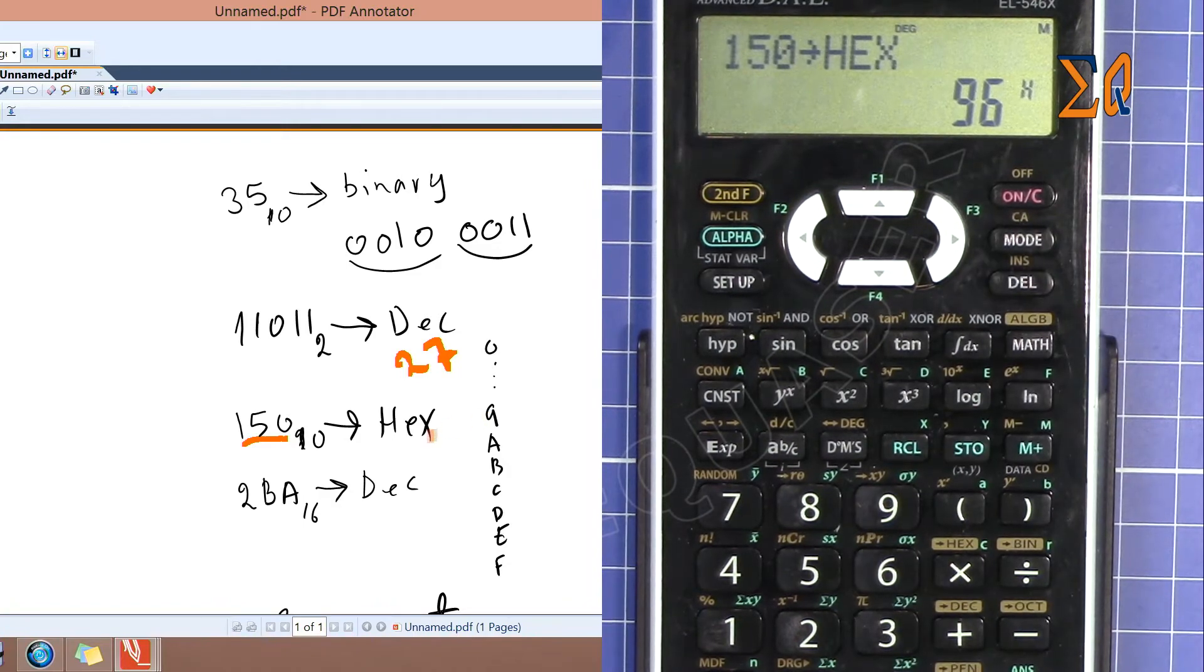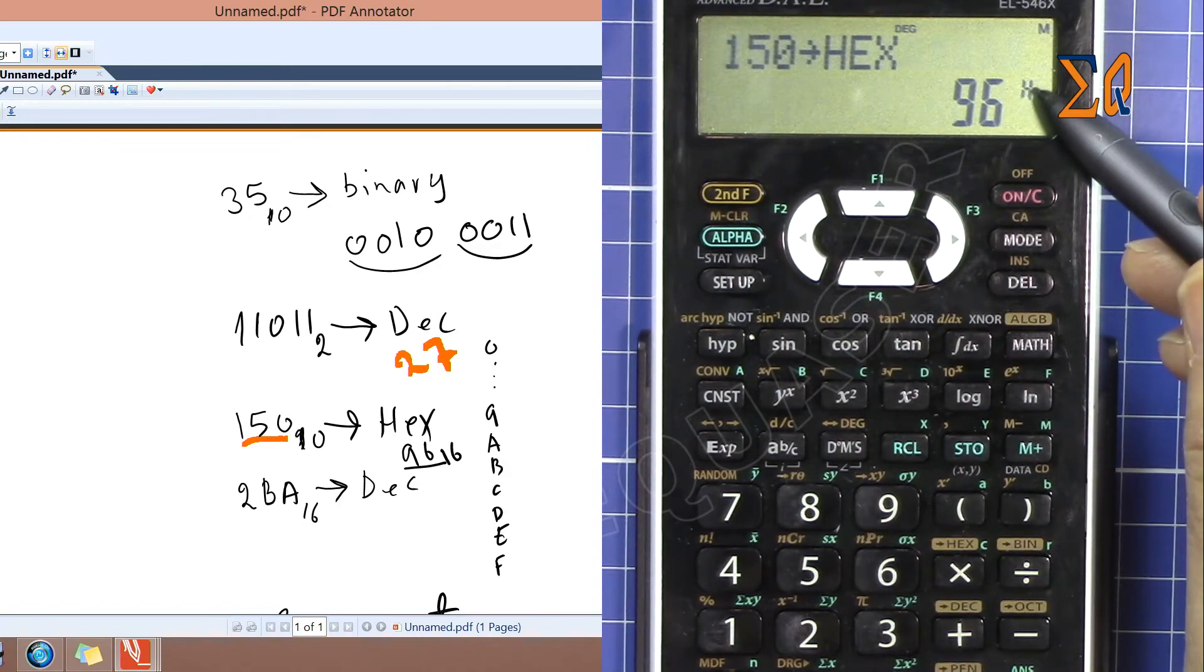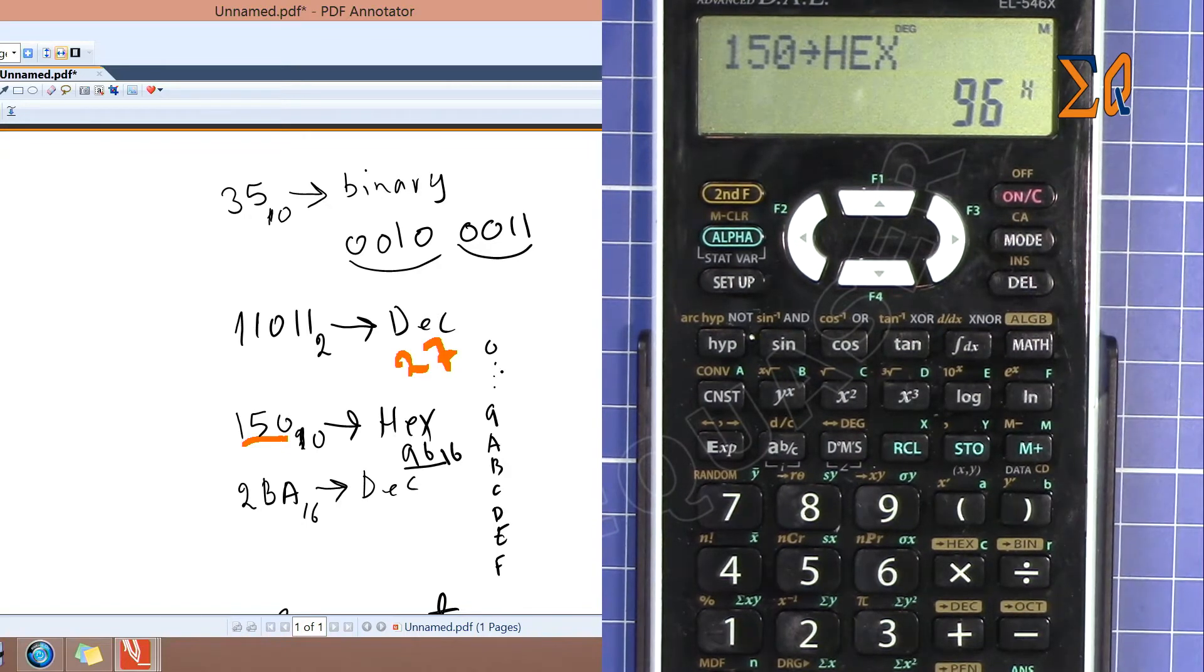So we got 96 which is base 16. Remember in hexadecimal we go from 0 up to 9, and after 9 we have A, B, C, D, E, F, so this goes up to 16. Now let's convert 2BA, which is base 16, to decimal.